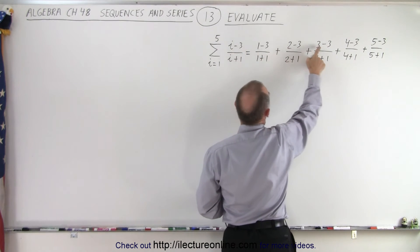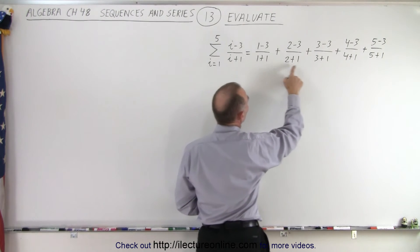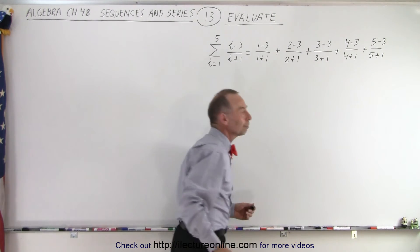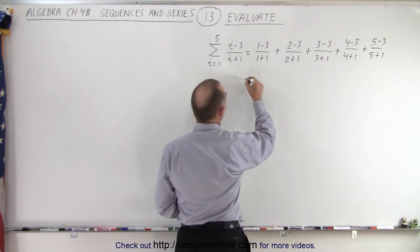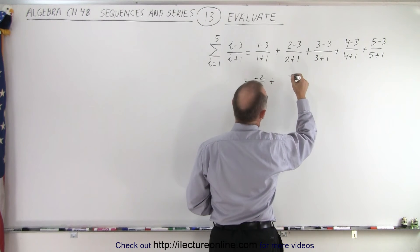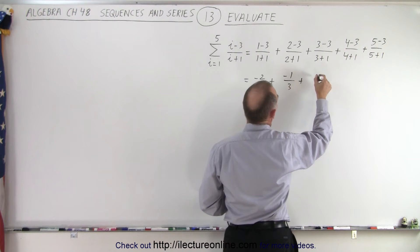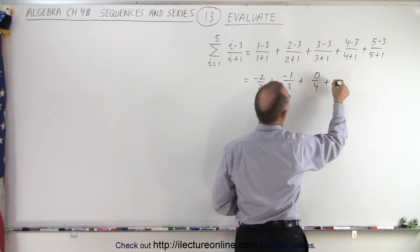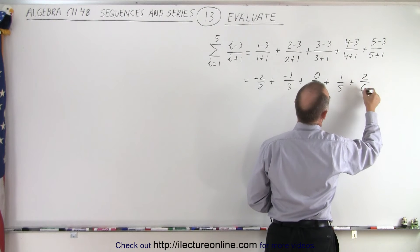So in the numerator, we get one, two, three, four, five minus three. And in the denominator, we get one, two, three, four, five in each one plus one. Now we need to evaluate each term and sum them up. So this is equal to minus two over two plus minus one over three plus zero over four plus one over five plus two over six.